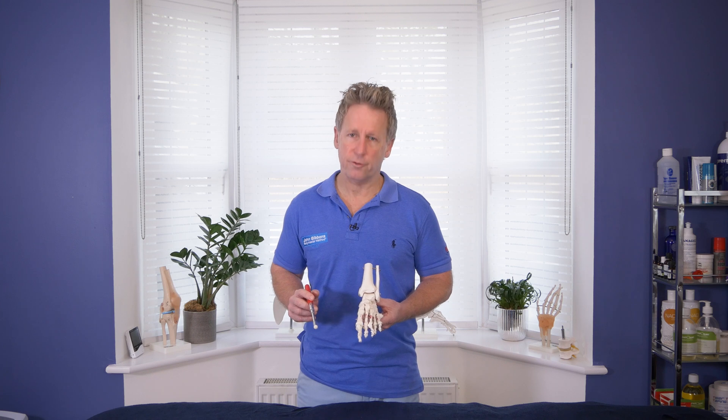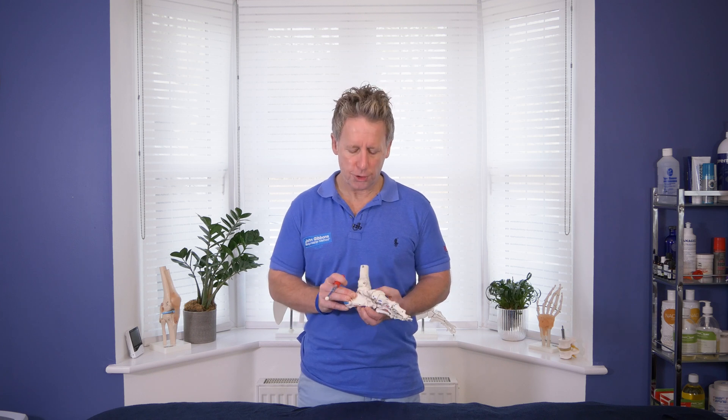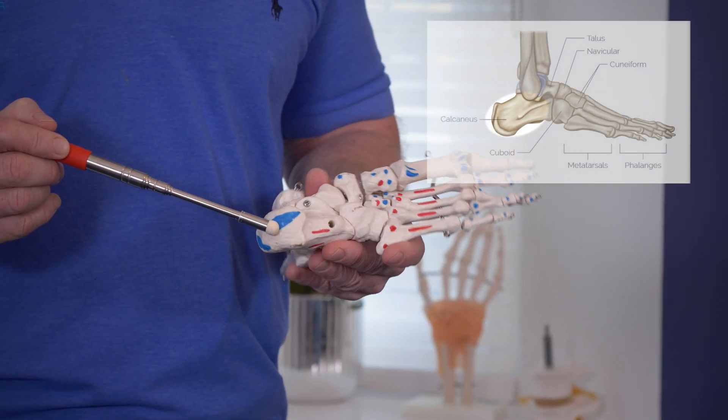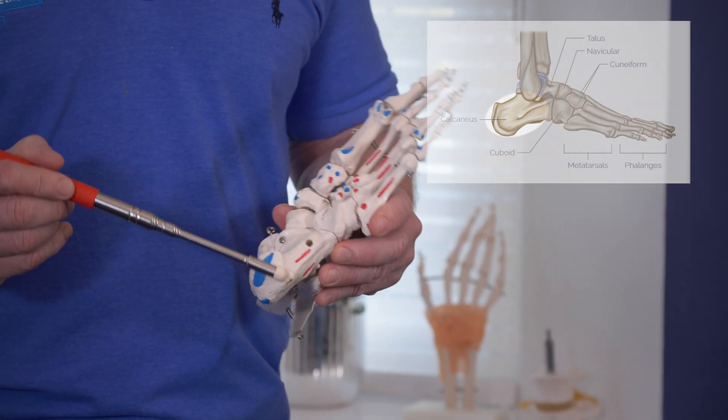The tarsal bones, we've got 7. The largest tarsal bone is known as the calcaneus, which is also known as the heel bone, and you can see the shape of it here.